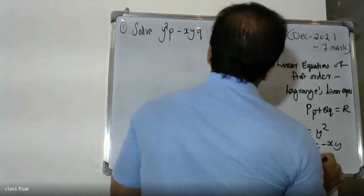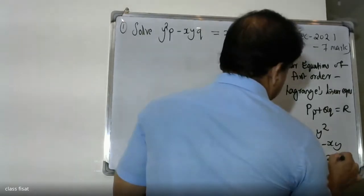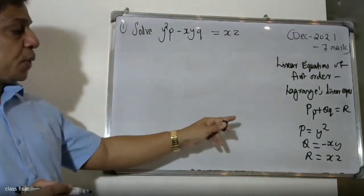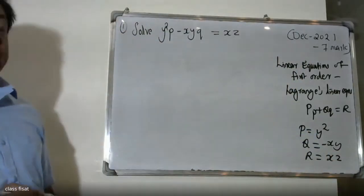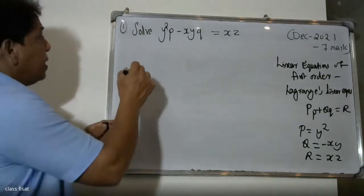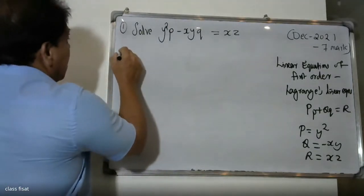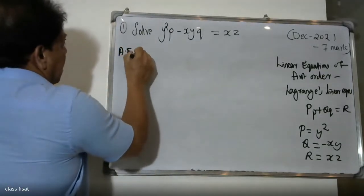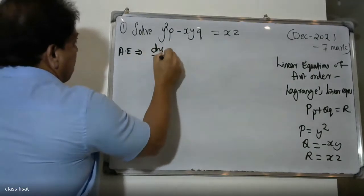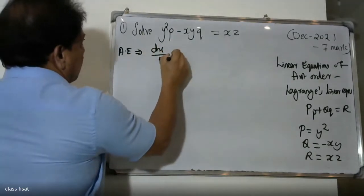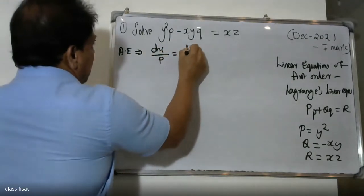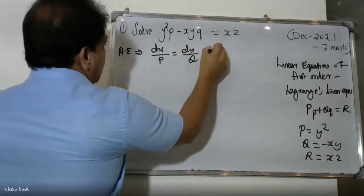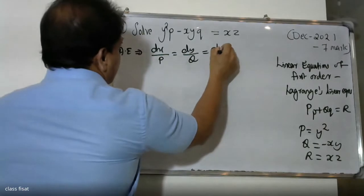That's why we write it in the same form. The auxiliary equations for Lagrange's linear equation are: dx by P equals dy by Q equals dz by R.